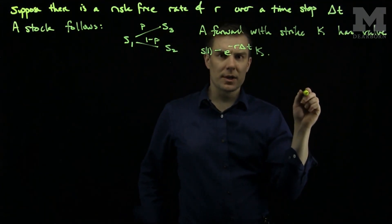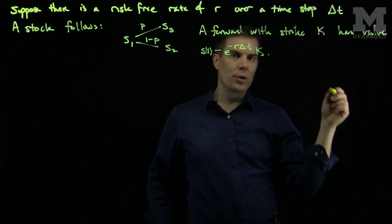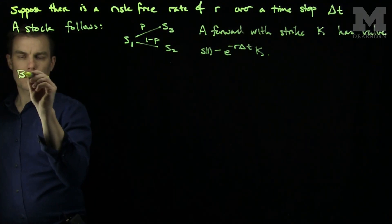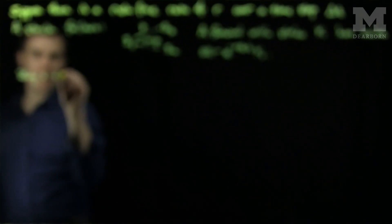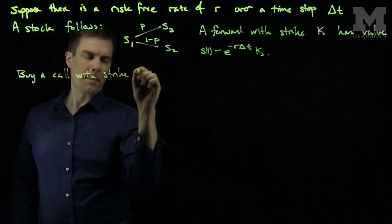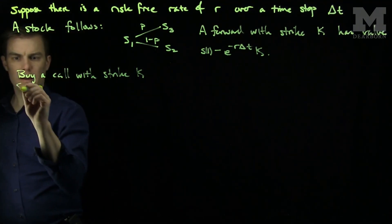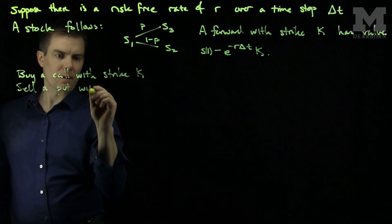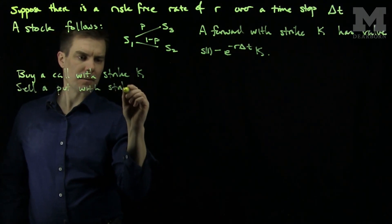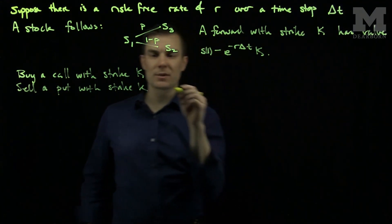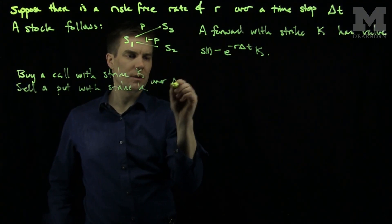We can use this to construct put-call parity. Let's suppose that we buy a call with strike K and we sell a put with strike K. Both of these will be exercised over the time step delta T.